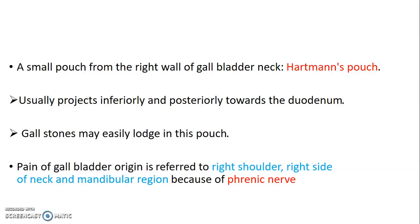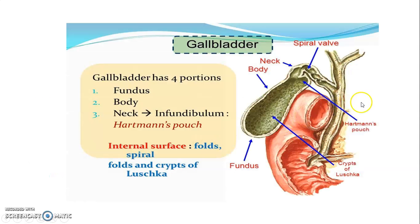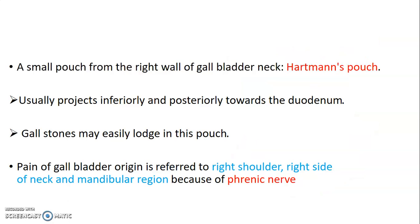Hartmann's pouch is usually projected inferiorly and posteriorly towards the duodenum, and gallstones tend to lodge within this pouch. Gallbladder pain is usually referred to the right shoulder, right side of the neck, and the mandibular region.